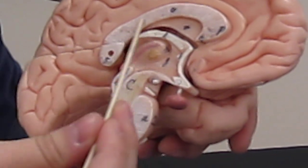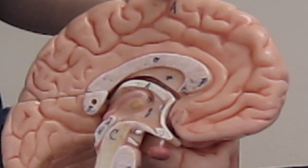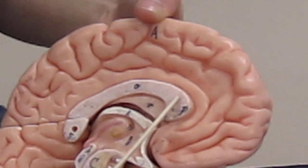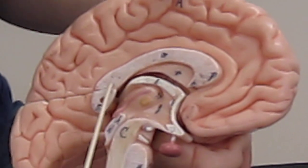The corpus callosum is this section right here, and it connects the two halves of the brain. It is composed of the genu, which is the anterior portion, and the splenium, which is the posterior portion.